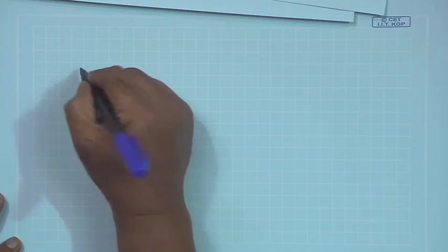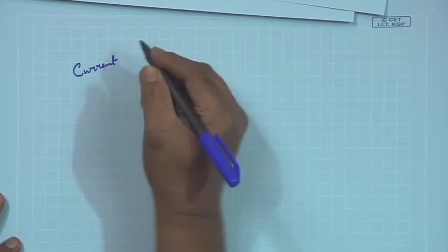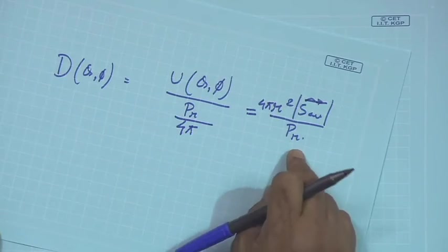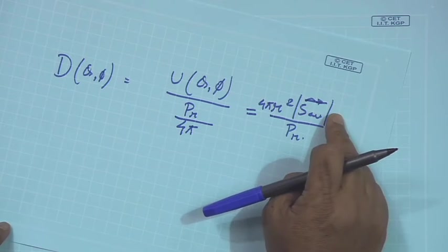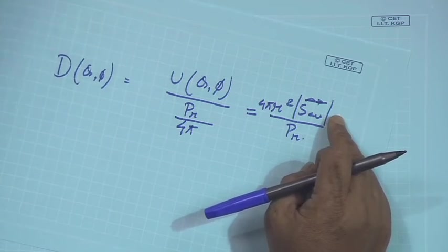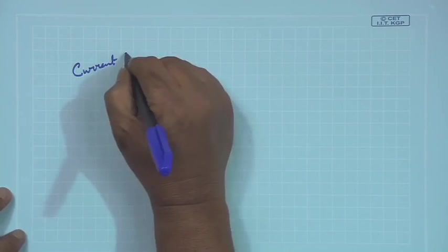For the current element, let us find the directivity because we already know both things: we have calculated the total power radiated and we have found the power density vector. So we can easily find the directivity of the current element.